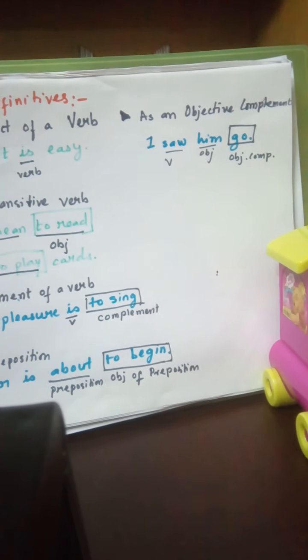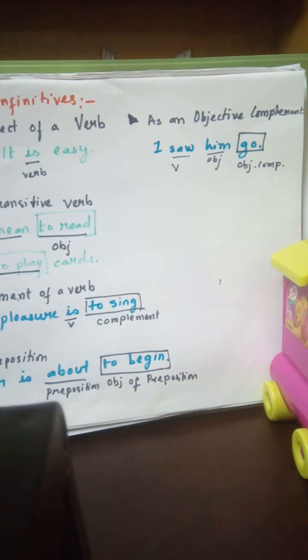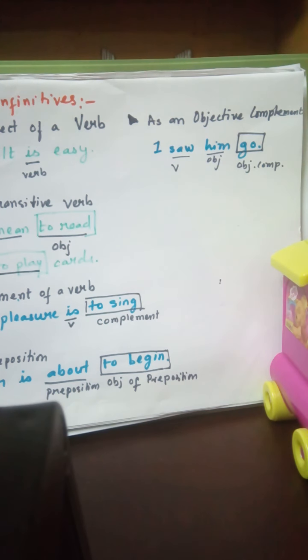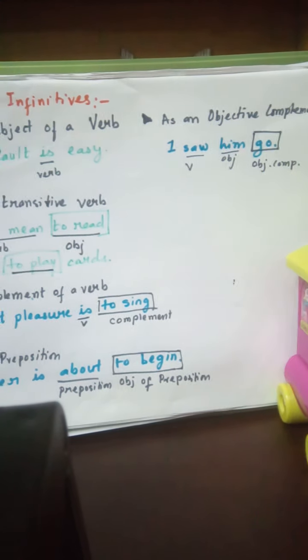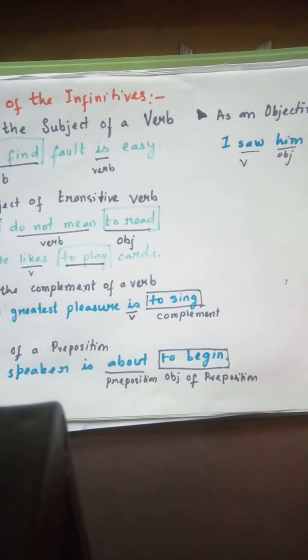The last usage of 'to' infinitives is as an objective complement. An objective complement is when you say something about the direct object in the sentence. For example, 'I saw him go' — 'him' is the direct object, and 'go' says something about him, making it the objective complement. So an infinitive can form an objective complement. If you remember these five basic usages of infinitives, you can identify an infinitive in a sentence — it is not as complicated as it sounds.